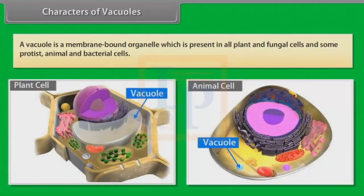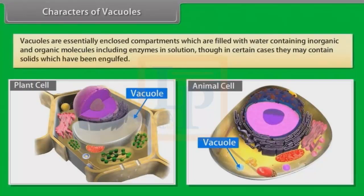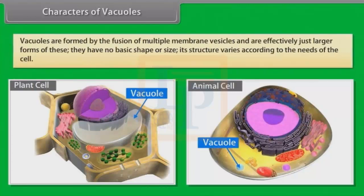A vacuole is a membrane-bound organelle which is present in all plant and fungal cells and some protist, animal and bacterial cells. Vacuoles are essentially enclosed compartments which are filled with water containing inorganic and organic molecules, including enzymes in solution, though in certain cases they may contain solids which have been engulfed. Vacuoles are formed by the fusion of multiple membrane vesicles and are effectively just larger forms of these. They have no basic shape or size; their structure varies according to the needs of the cell.